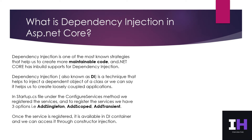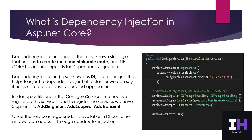In the startup.cs file, under the ConfigureServices method, we register the services. To register the services, we have three options: AddSingleton, AddScoped, and AddTransient. Once the service is registered, it is available in the DI container, and we can access it through constructor injection.